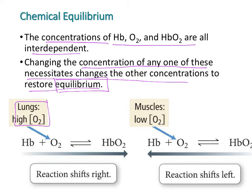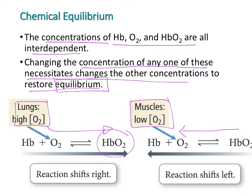For example, at your lungs you have high oxygen, so the reaction shifts to overcome that change and increases the amount of hemoglobin bound to oxygen. In your muscles, if you've been doing exercise, you have low O2 concentration, so the reaction shifts toward that side to compensate. The main idea is that things are not static — they change depending on concentrations, and equilibrium is disrupted and then restored.